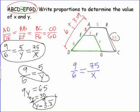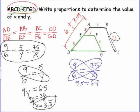Here, go back and solve for X. We do our cross product property. 9 times X equals 6 times 7.5. So we have 9X equals 6 times 7.5, which is 45. Divide both sides by 9, we get X equals 5.